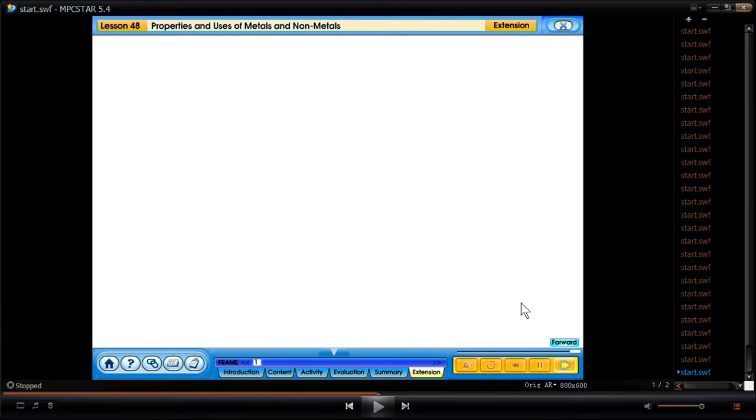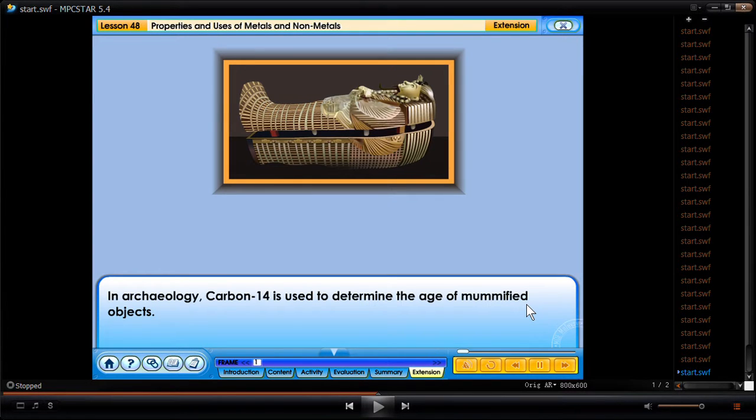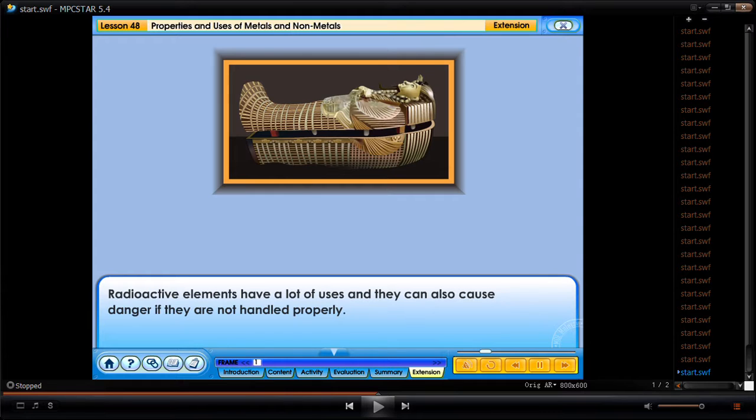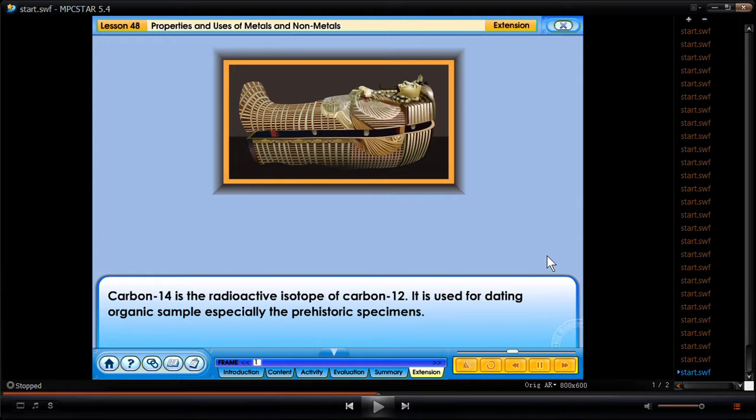In archaeology, carbon-14 is used to determine the age of mummified objects. Radioactive elements have a lot of uses and they can also cause danger if they are not handled properly. Carbon-14 is the radioactive isotope of carbon-12. It is used for dating organic samples, especially the prehistoric specimens.